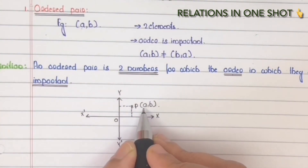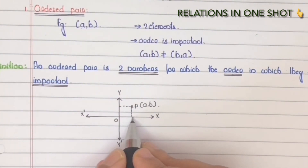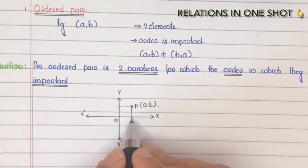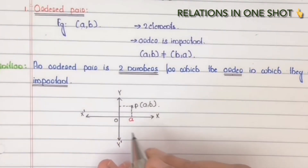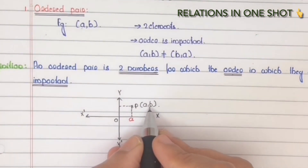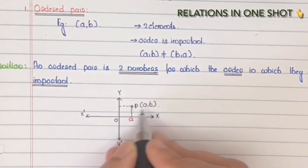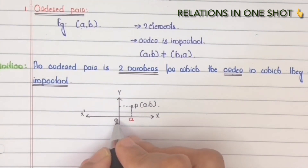The first element A is called the X-coordinate — that is, the distance from the origin along the X-axis. And B is called the Y-coordinate — that is, the distance from the origin along the Y-axis.